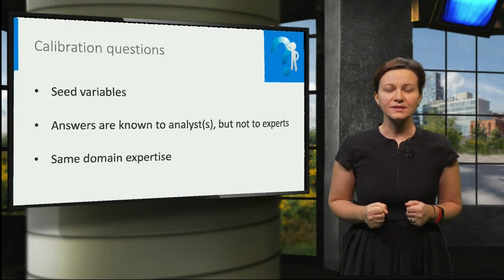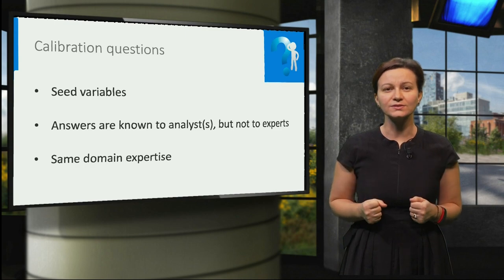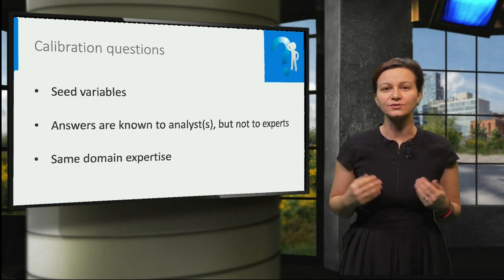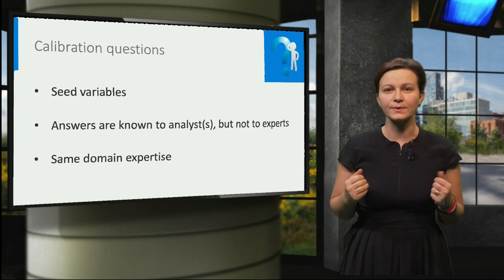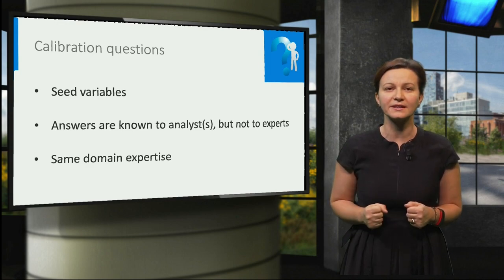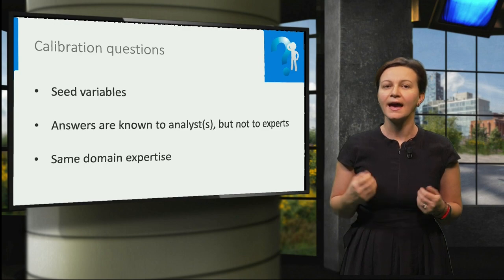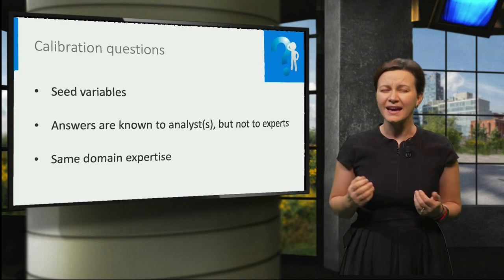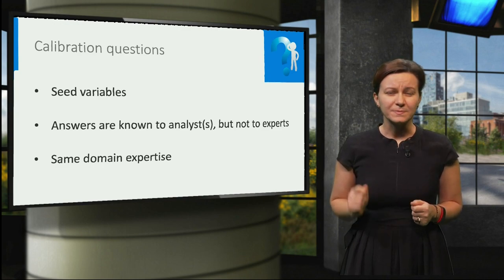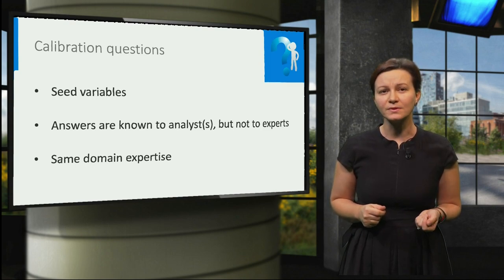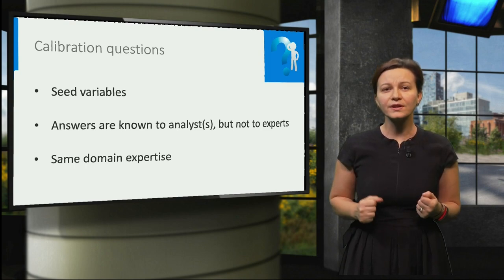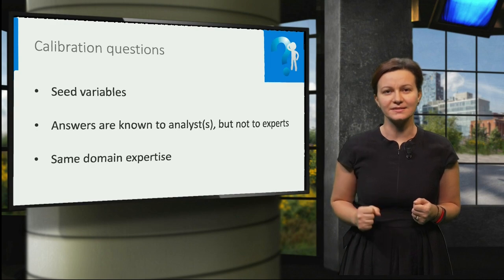Similarly to the questions of interest, the calibration questions should regard uncertain quantities for which experts can provide their assessments. The calibration questions need to cover the same domain expertise as the questions of interest, as much as possible. That is because an important assumption of the classical model is that experts' performance on the questions of interest is the same as the performance on calibration questions.